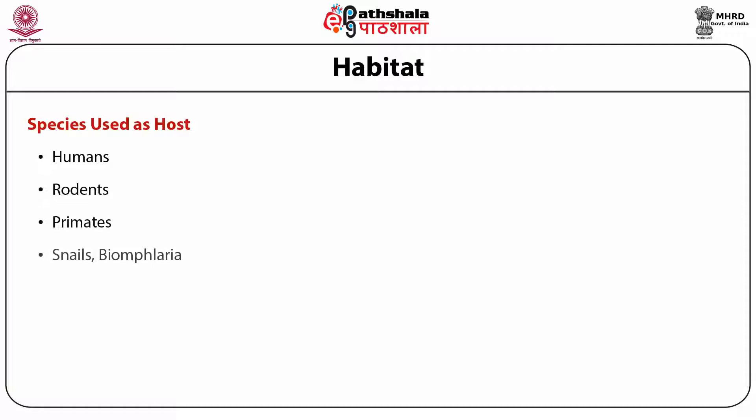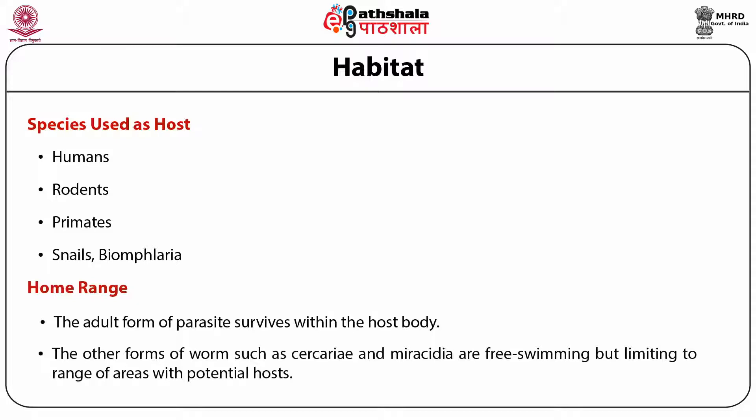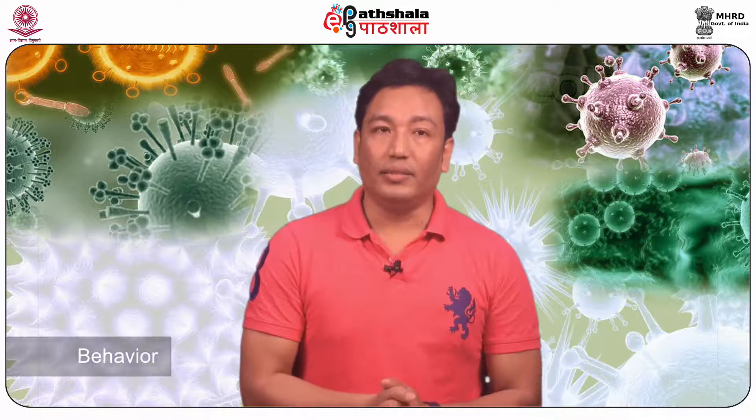Species used as hosts: humans, rodents, primates, snails, Biomphalaria. Home range: the adult form of parasite survives within the host body. The other forms of worms such as cercaria and miracidia are free-swimming but limited to the range of areas with potential hosts.